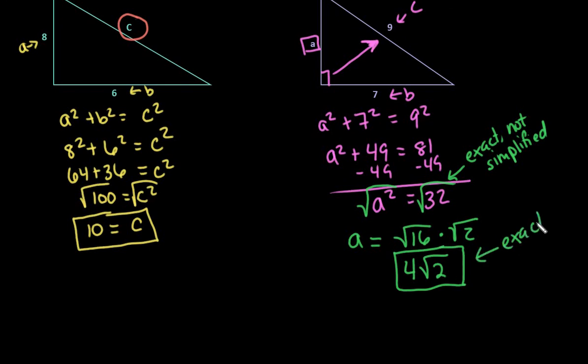So if it asks for an exact answer, that's what they're looking for. If it asks for an approximate answer, then you would just plug it into your calculator. And so if I do the square root of 32 in my calculator, I get approximately 5.66 units.